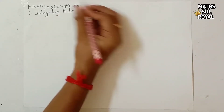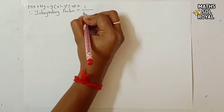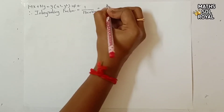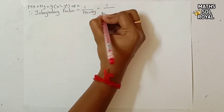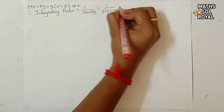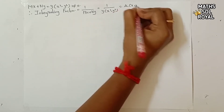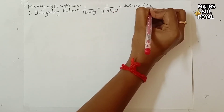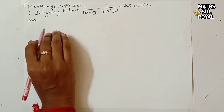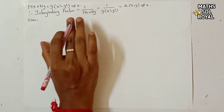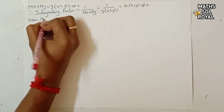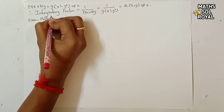For Method 1, the integrating factor = 1/(Mx + Ny) = 1/[y(x² - y²)], where y(x² - y²) ≠ 0. Now multiply equation 1 by this integrating factor.